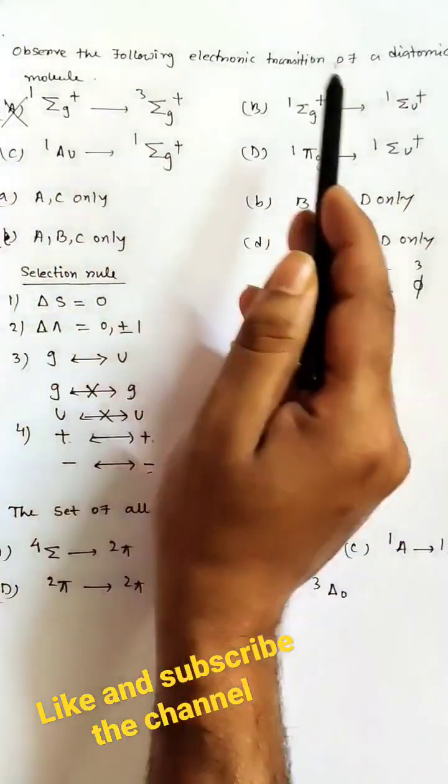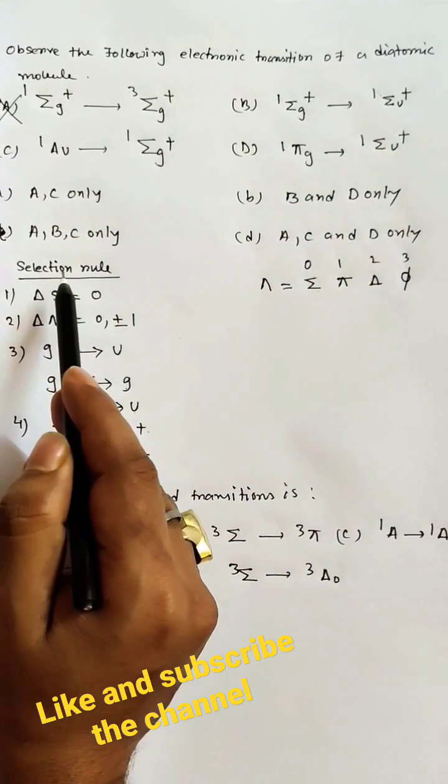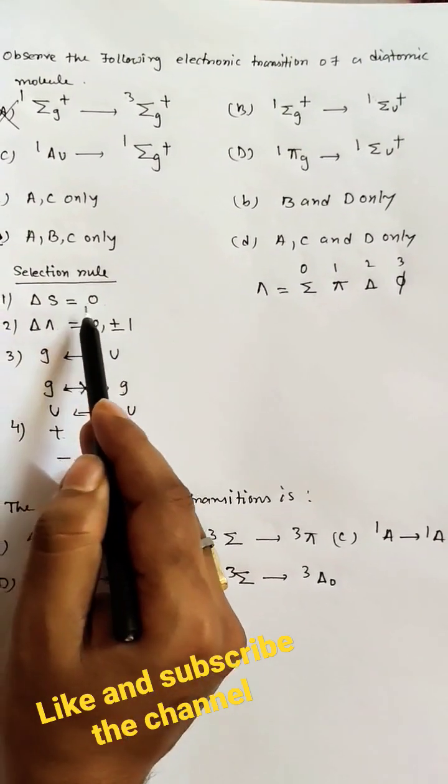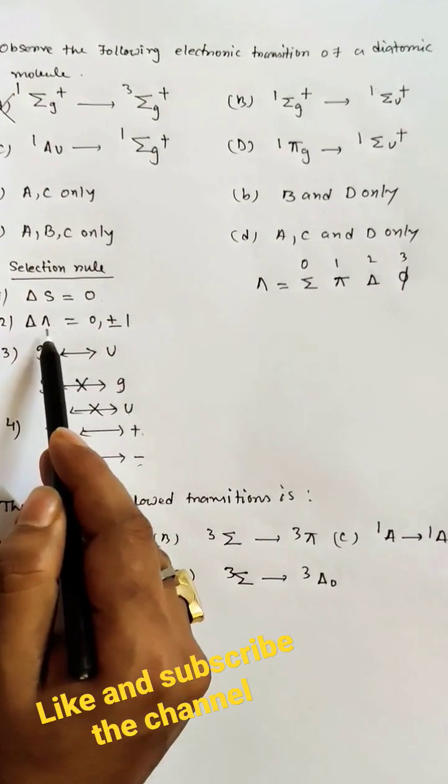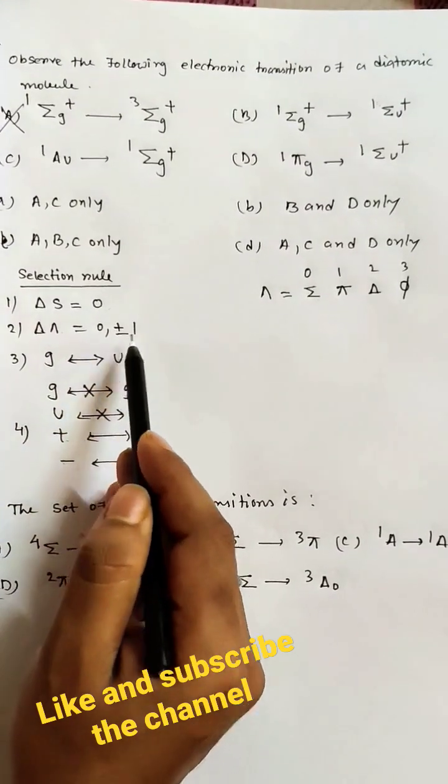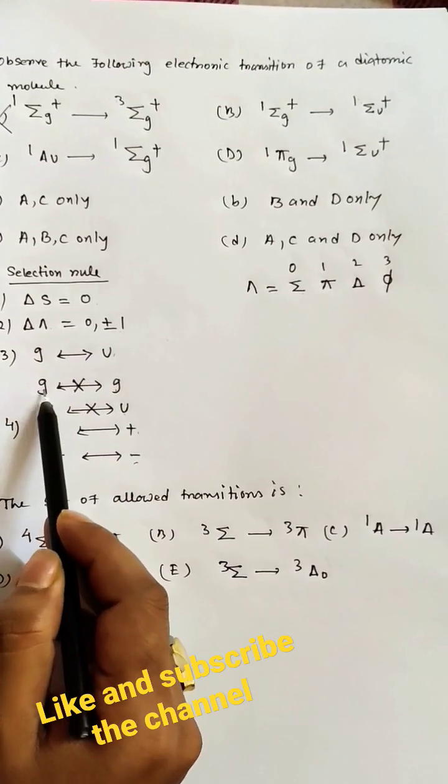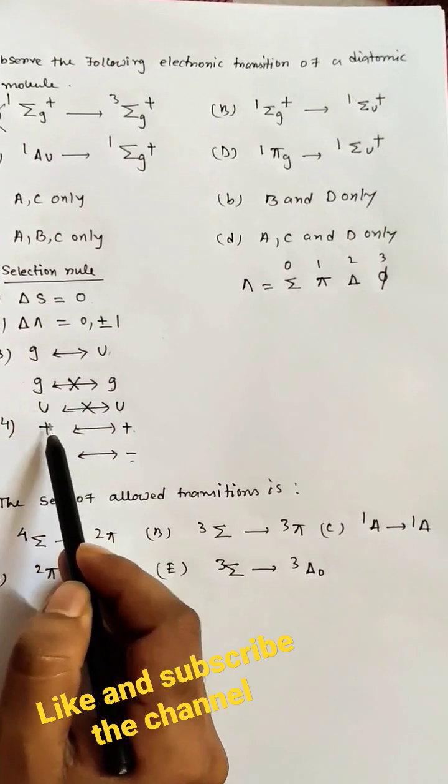The allowed transitions follow the selection rule: del s equals 0, meaning spin multiplicity difference is 0. Del lambda value is 0, plus or minus 1. G to u transitions are allowed, while g to g and u to u transitions are not allowed.